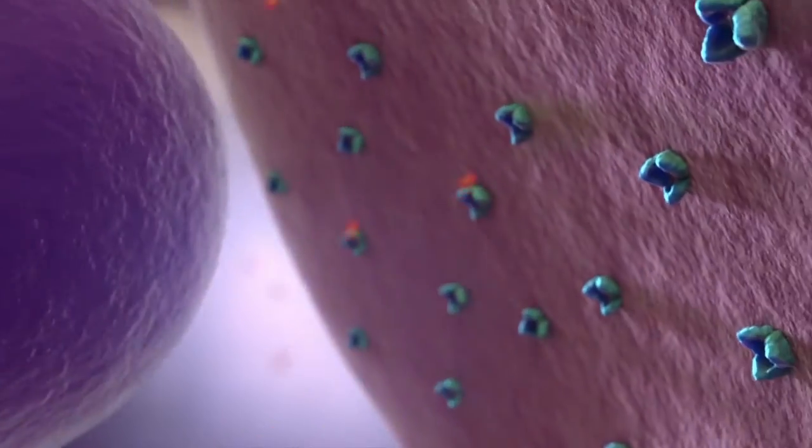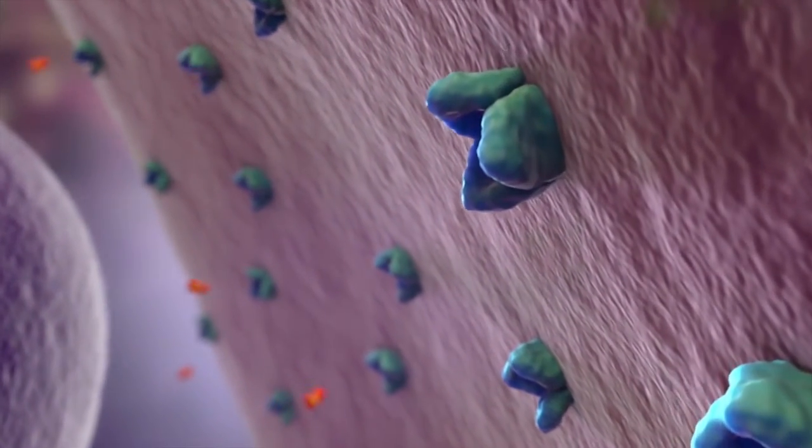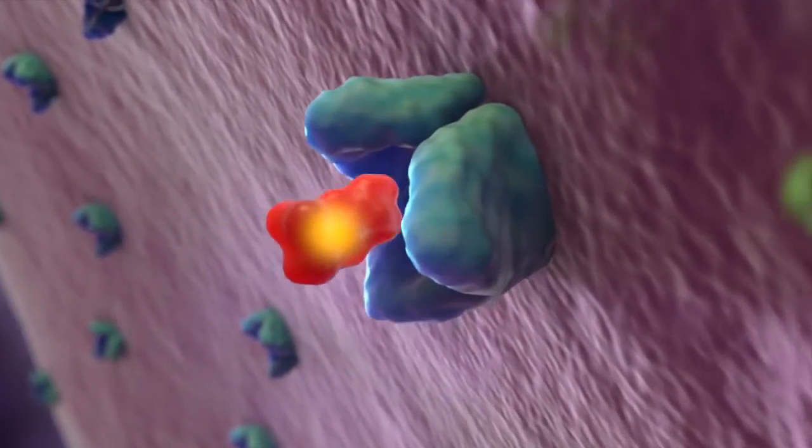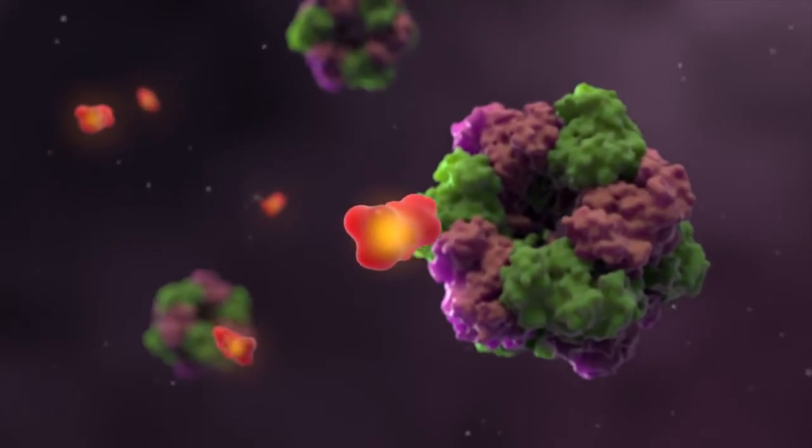After its release, glutamate is cleared from the extracellular space through excitatory amino acid transporters, or EAATs, which are located primarily on the surface of glial cells.